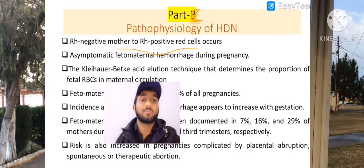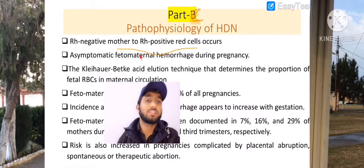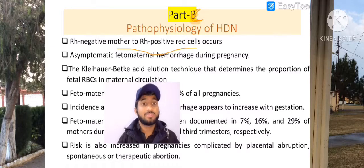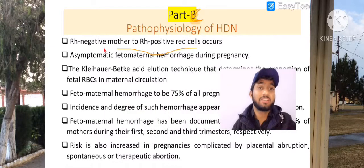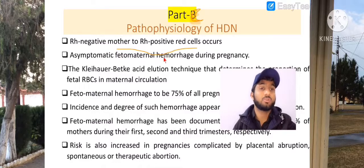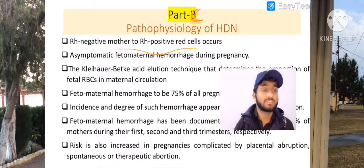Further, we are going to talk about asymptomatic fetomaternal hemorrhage during pregnancy. This is basically HDN. Here we have erythroblastosis fetalis, which is the case of fetal hemorrhage during pregnancy — asymptomatic fetal hemorrhage during pregnancy.